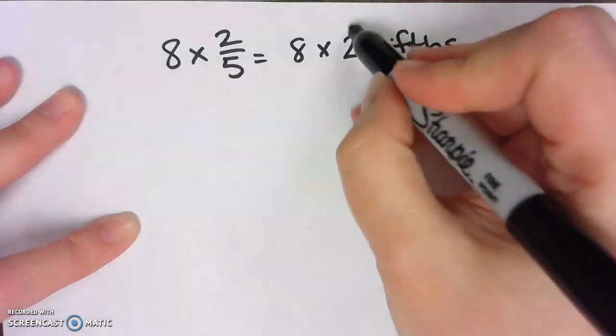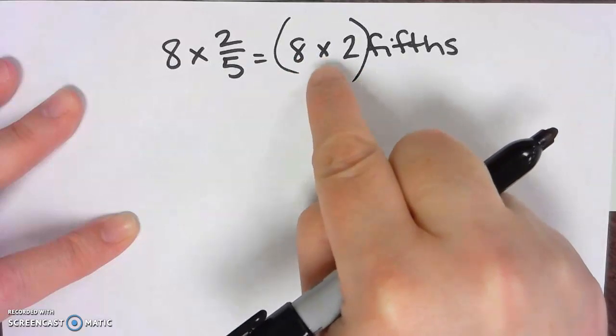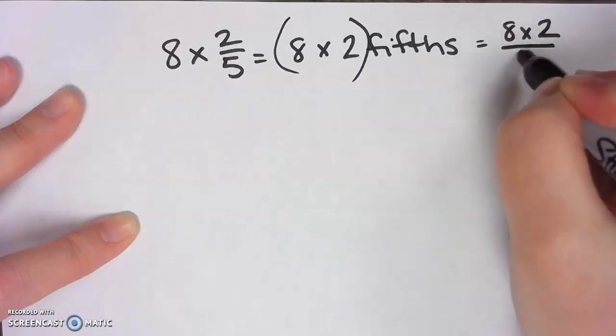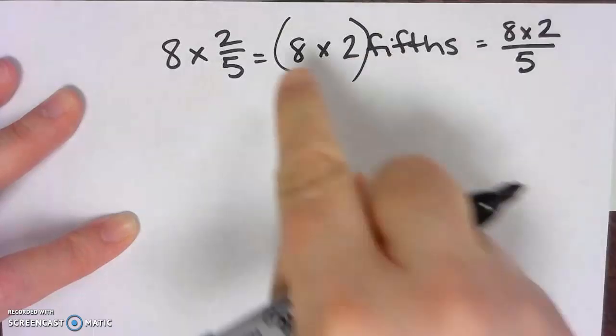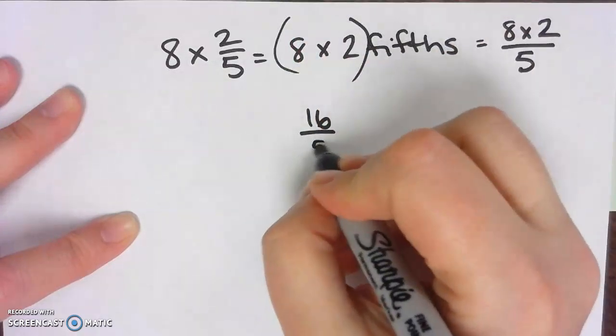And we're going to use the associative property and make the eight and the two play together. You have to associate with different friends. So eight times 2 fifths. Eight times 2 is 16, and fifths, so 16/5.